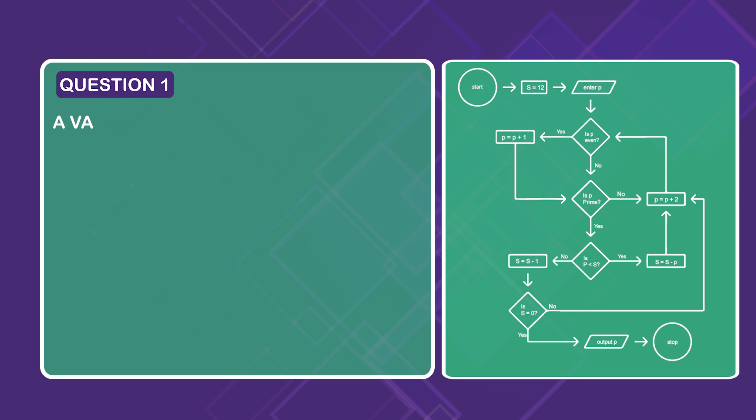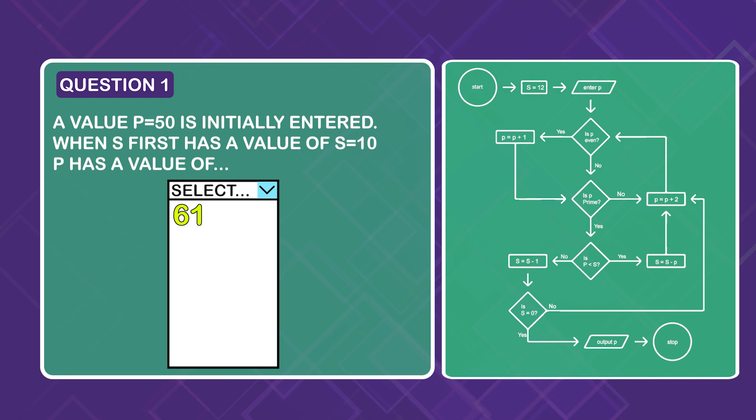Here are the questions. Question 1. A value p equals 50 is initially entered. When s first has a value of s equals 10, p has a value of 61, 57, 59, 51, or 53.